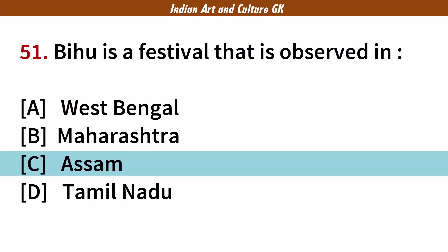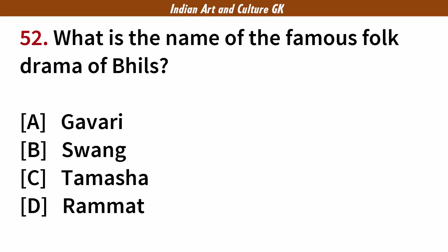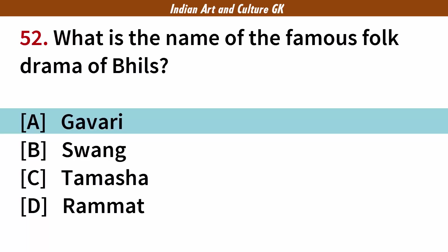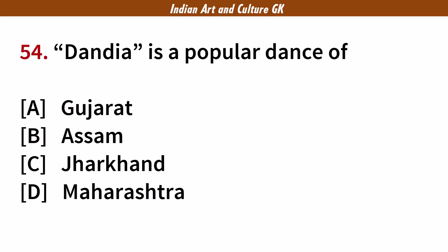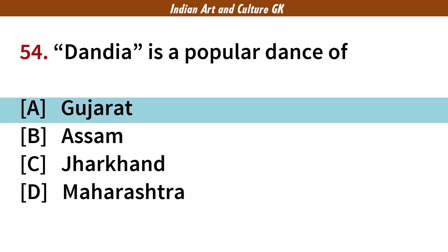What is the name of the famous folk drama of Bhils? Answer: A. Gavri. Bhangra is a dance of? Answer: D. Punjab. Dhandia is a popular dance of? Answer: A. Gujarat.